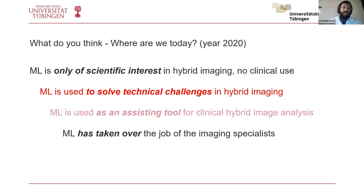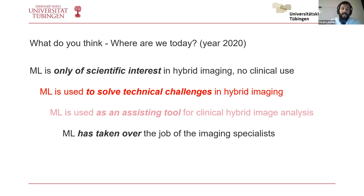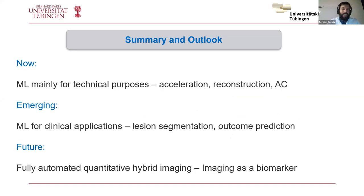Let's go back to the initial question: where are we today? Machine learning is already part of hybrid imaging, but mostly in aspects we do not directly see — it's in the scanner software and reconstruction algorithms, helping to accelerate and improve images. We are just getting started in using machine learning as an assisting tool for clinical image analysis — for automated detection, segmentation, and quantification such as tumor volume. But this is still not as robust as we would like. There is a lot of need for further research. And machine learning has not taken over our job yet, but who knows what will happen in the future.